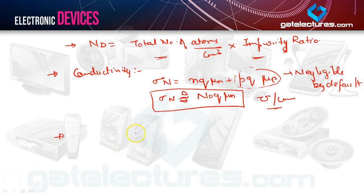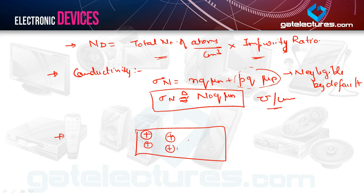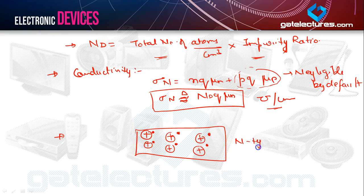For the representation of an N-type semiconductor, we represent the immobile ions as positive, carrying electrons shown as dots or by a negative sign. The pentavalent impurities lose the electrons, hence gaining positive charge. This is the representation of an N-type semiconductor.